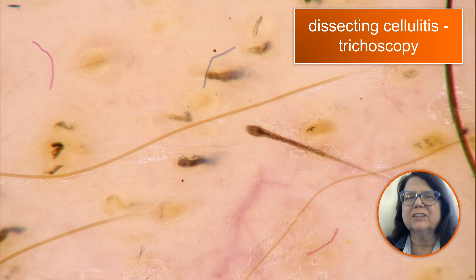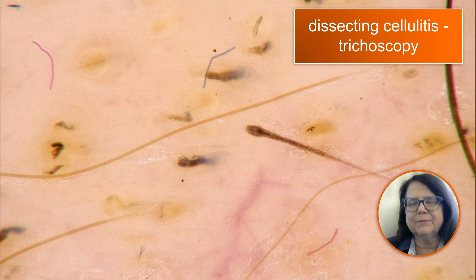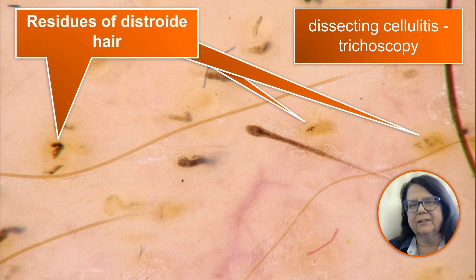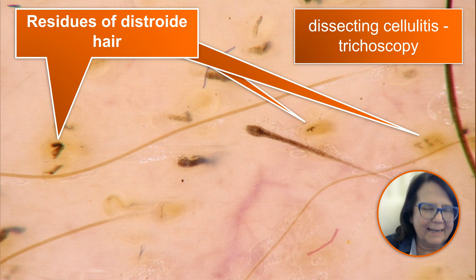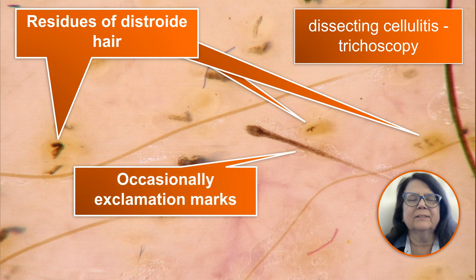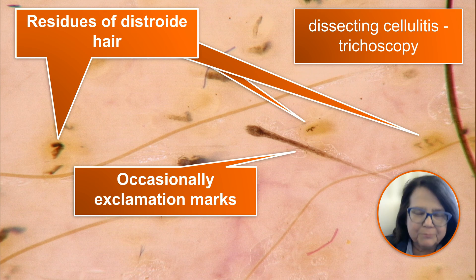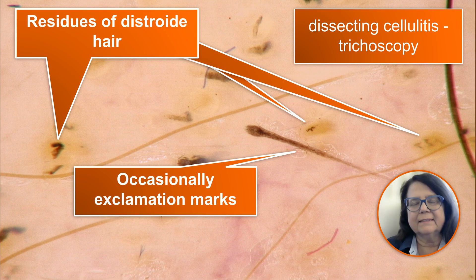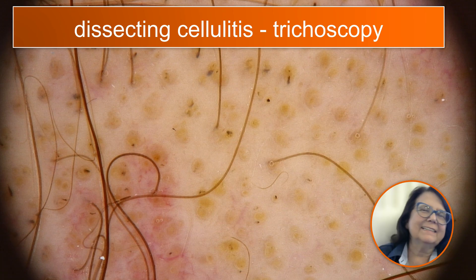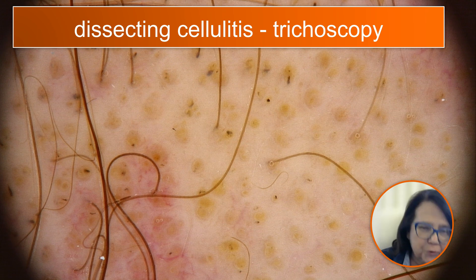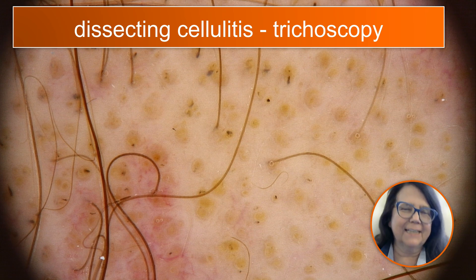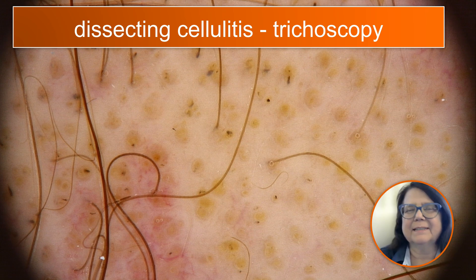When we say black dots, this is not really precise, because the residues of the hair shafts do not always appear as dots — they may have a high variety of different shapes and sizes. Also, occasionally in dissecting cellulitis we may see some exclamation mark hairs, so the presence of exclamation mark hairs does not exclude the diagnosis. With a handheld dermoscope, the structures we can appreciate are exactly the same, just seen in smaller size.